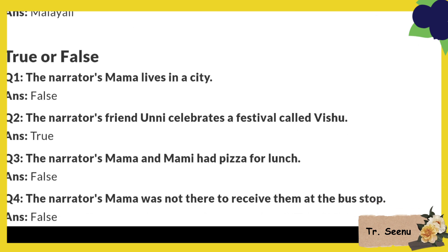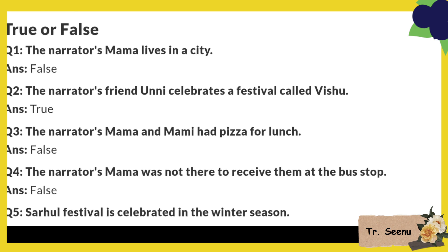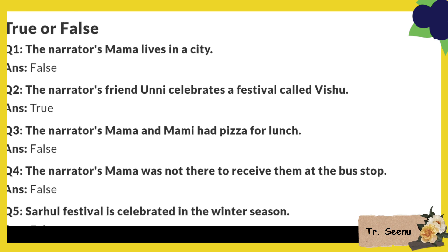True or False: The narrator's mama lives in a city? False - they lived in a village. True or False: The narrator's friend Annie celebrates a festival called Vishu? True.